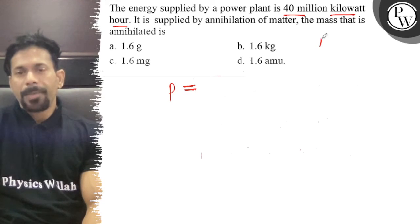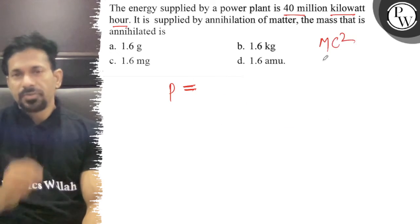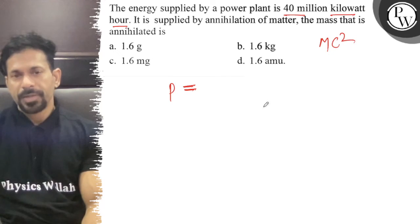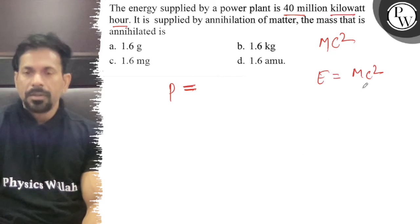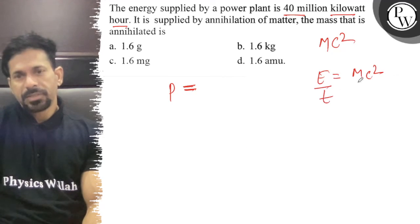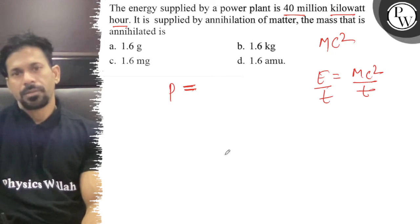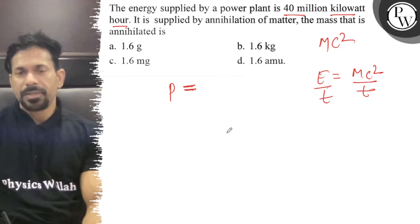How much mass is annihilated? Imagine that M mass is annihilated. Energy released for M mass is mc². And per second is divided by T. So mc² by T is the power.